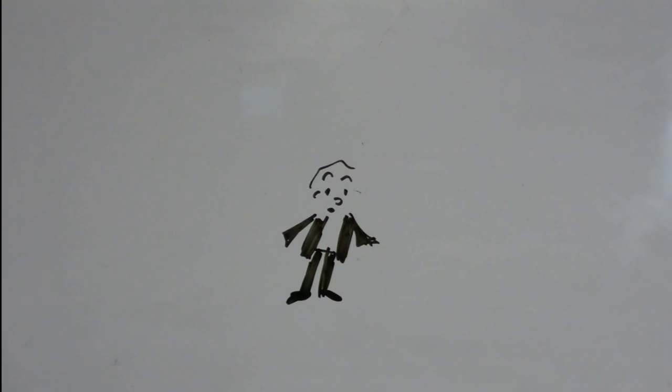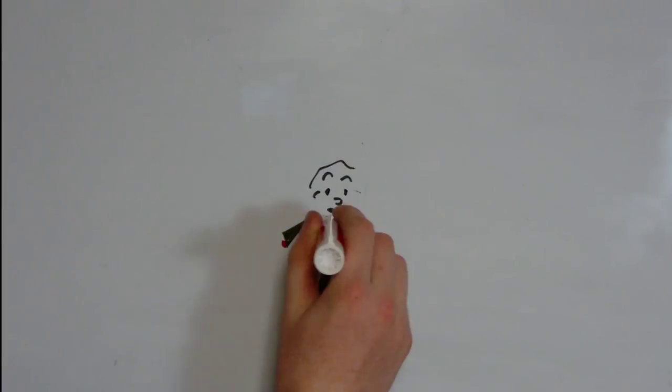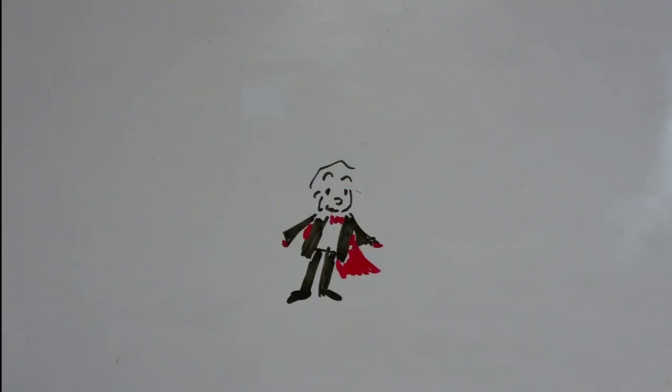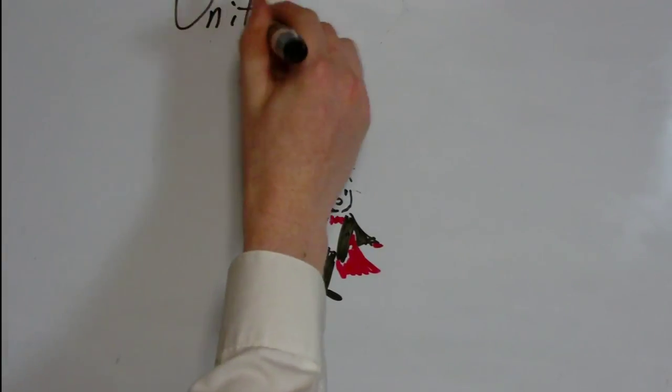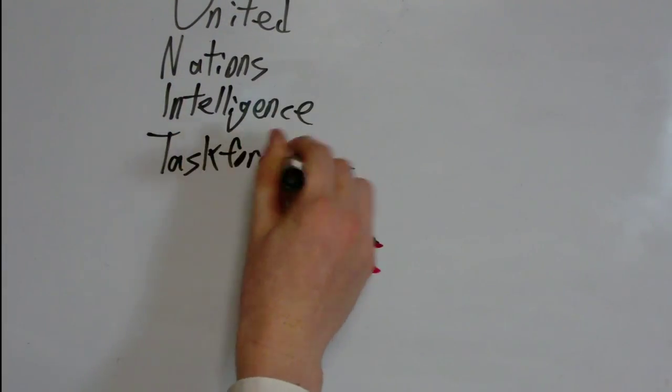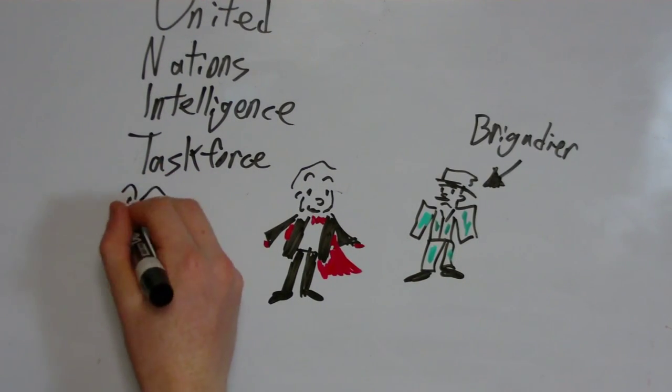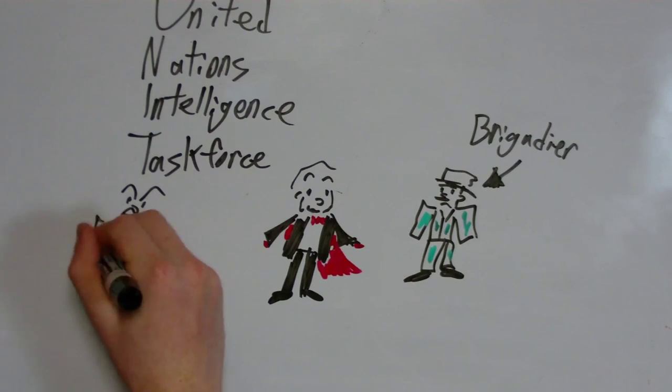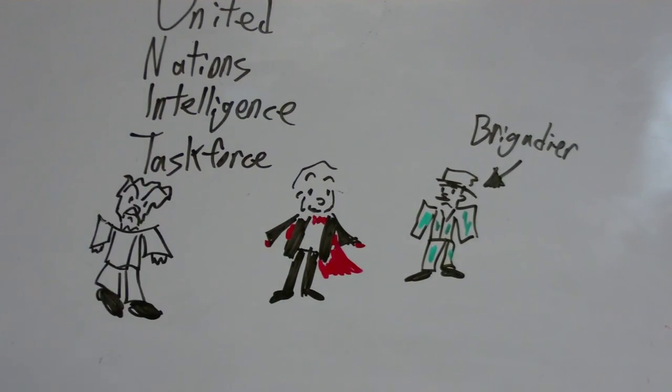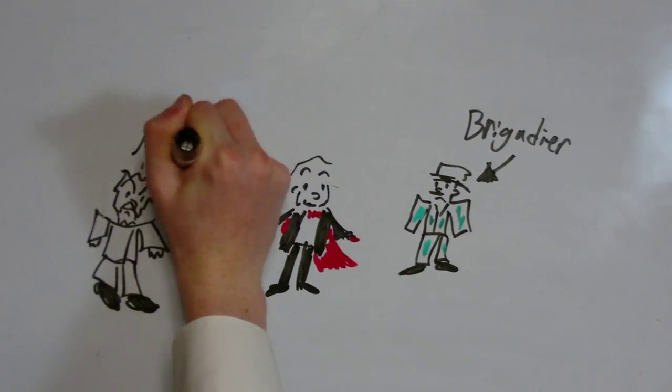The third me joined the United Nations Intelligence Task Force to help protect the Earth from all the evil aliens that wanted to take it over. Also, I reunited with the Master, a friend from my childhood, who turned evil and wanted to take over the Earth as well as the entire universe. We don't get along very well.